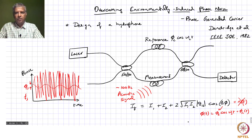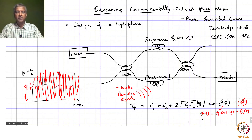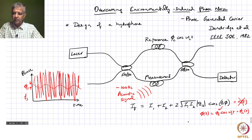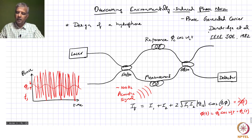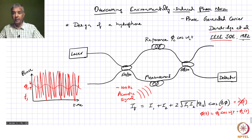So far we have been looking at the challenges in phase modulated sensors and overcoming some of those challenges. In the last lecture we looked at overcoming environmentally induced phase noise, and that is done through the phase generated carrier technique, which was introduced by Dandridge et al. in their IEEE Journal of Quantum Electronics paper in 1982.